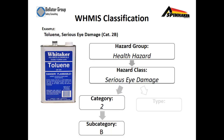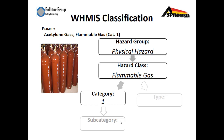Let's look at an example. Toluene is a health hazard — looking at the category breakdown, it can seriously damage our eyes. It's defined as category two with a subcategory B. Acetylene gas is a flammable gas and therefore a physical hazard. It's a flammable gas assigned only category number one.